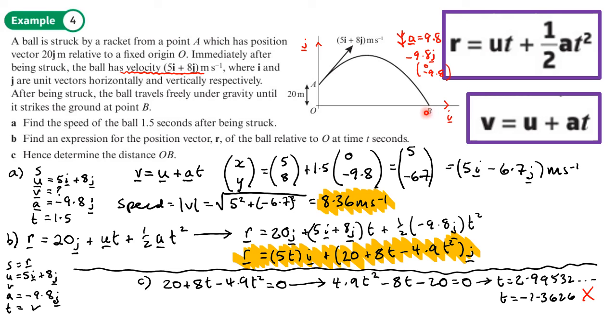Remember horizontally the speed is constant, so we can use speed, distance, and time. We have the horizontal velocity which is 5i, so every second it's going 5i across. It's going 5i for this number of seconds, so we times that by 5. We're going across by 5i every second for 2.995 seconds.